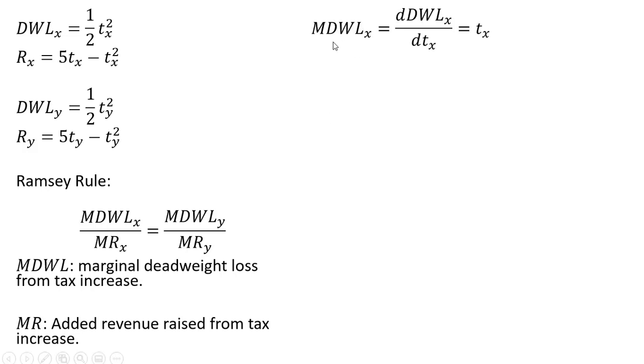And now let's calculate the marginal deadweight loss in the market for good X. So we're going to take the derivative of this deadweight loss function up here with respect to the tax, and we just get back the tax. And we do a similar thing in the market for good Y, taking the derivative of the deadweight loss function in the market for good Y with respect to the tax in that market, you just get back the tax in that market.